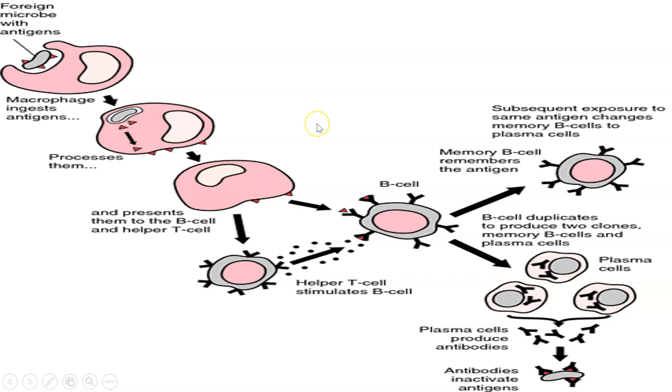Finally, once the B cells have inactivated the pathogen, more macrophages will come along and engulf them by phagocytosis and destroy them. This diagram summarizes what happens — please pause the video here and have a good look at this to understand what's going on.